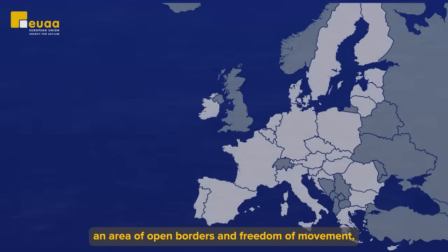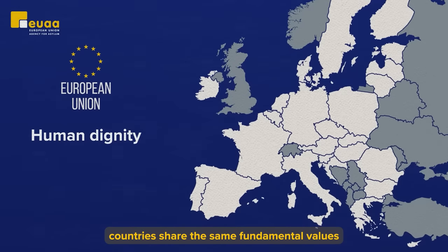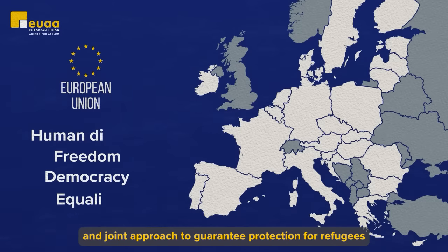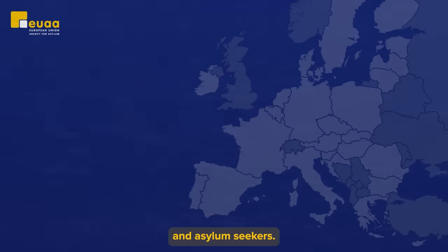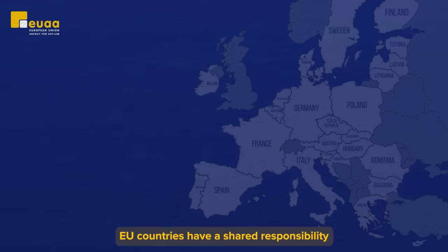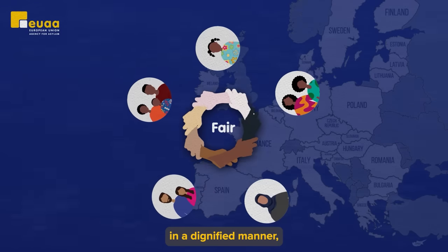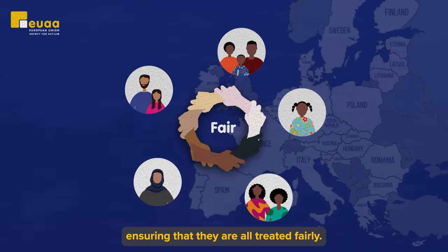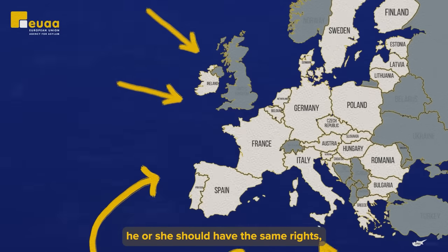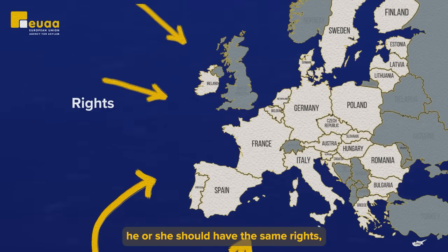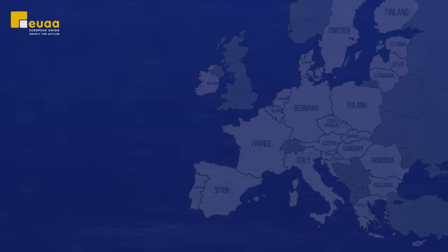In Europe, an area of open borders and freedom of movement, countries share the same fundamental values and joint approach to guarantee protection for refugees and asylum seekers. EU countries have a shared responsibility to welcome asylum seekers in a dignified manner, ensuring that they are all treated fairly. No matter where an individual applies, he or she should have the same rights, obligations, and reception conditions.